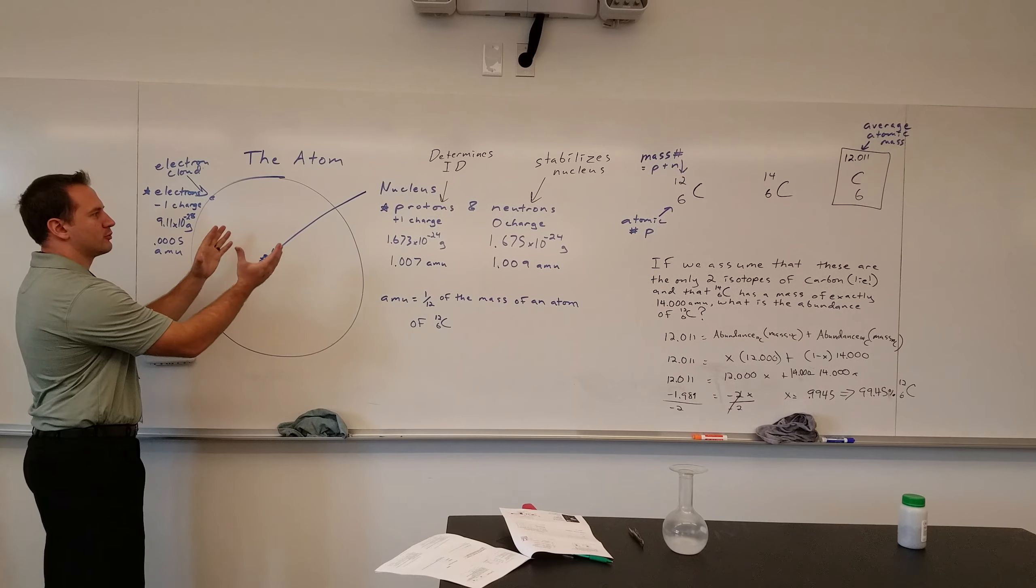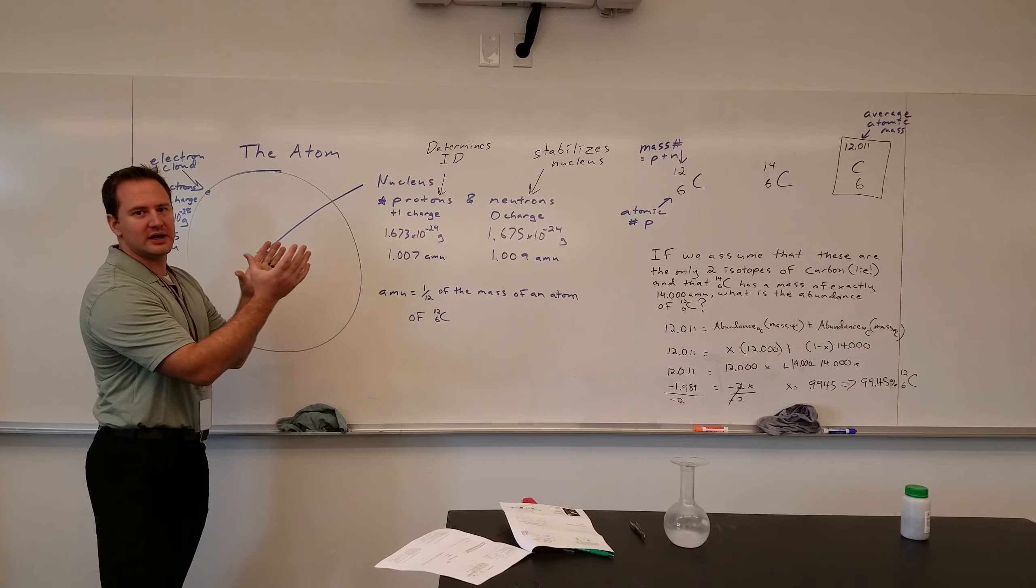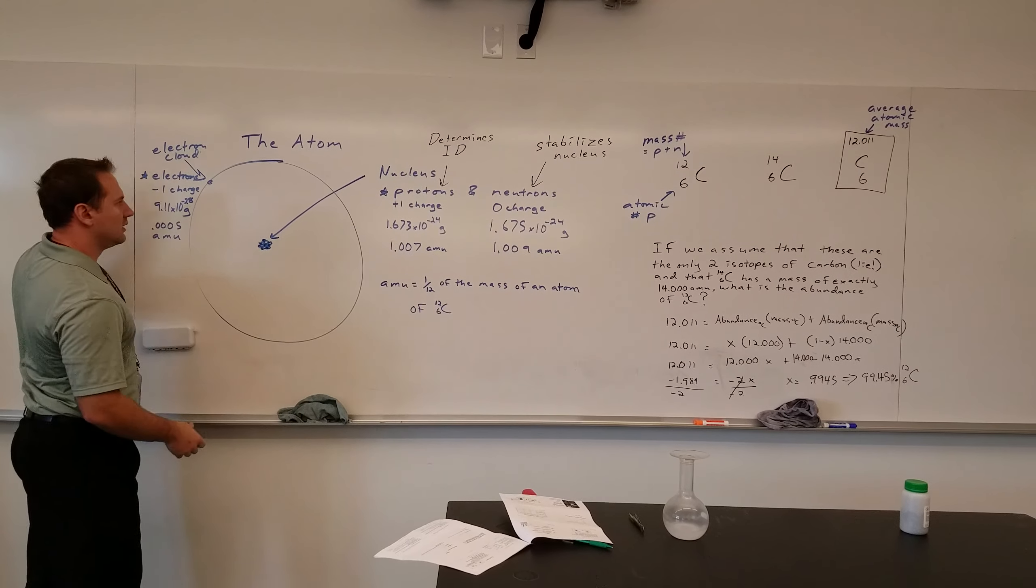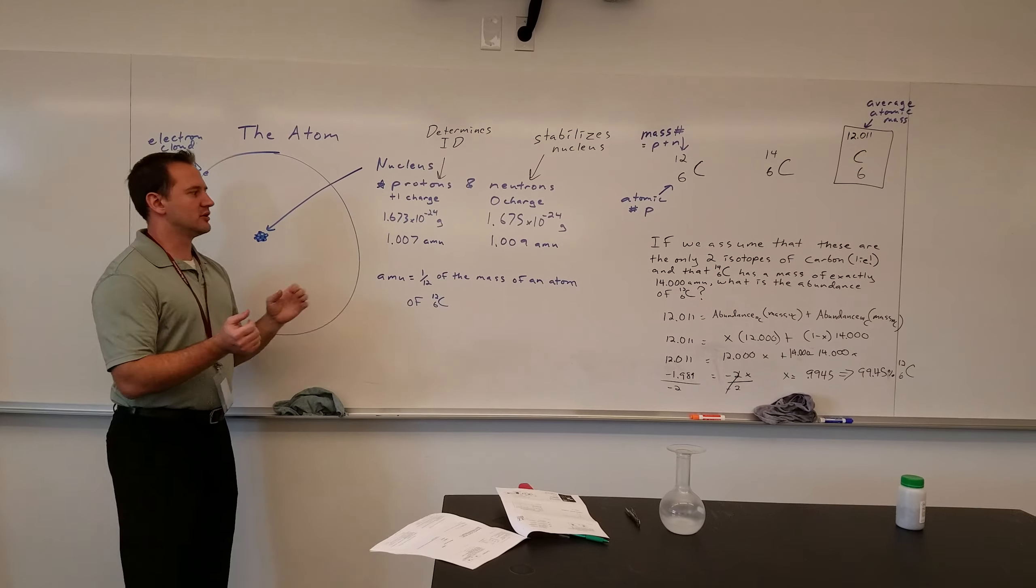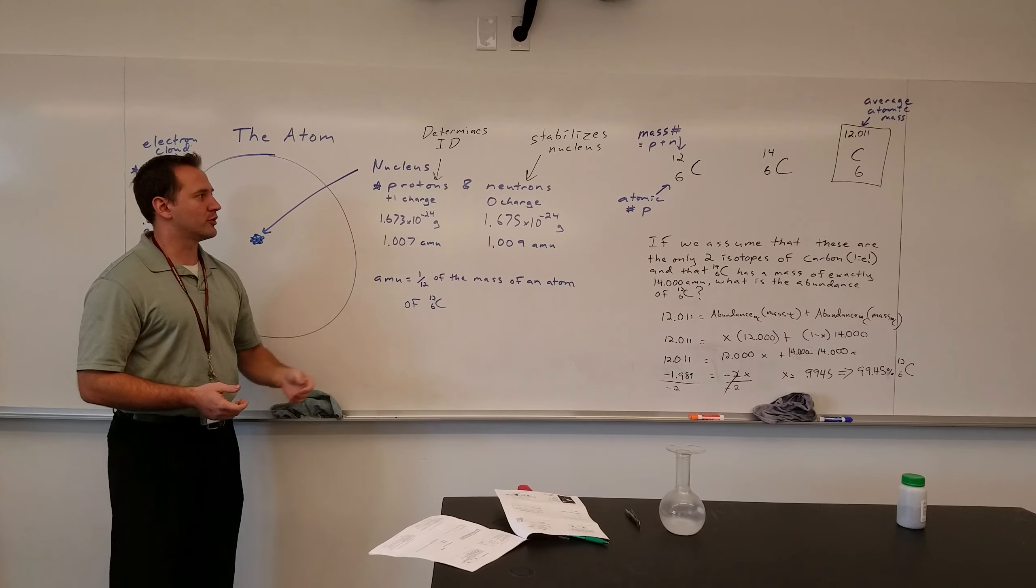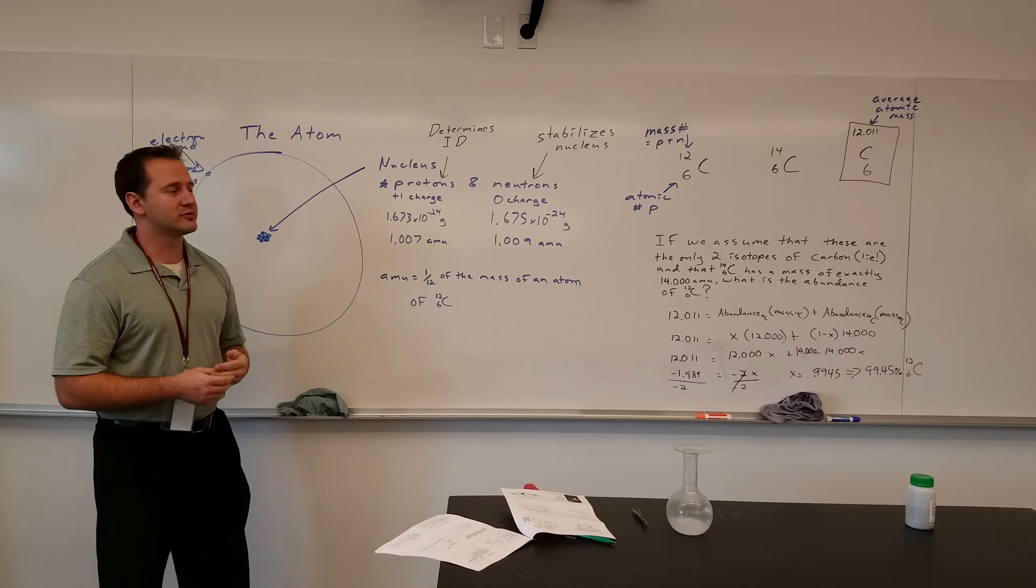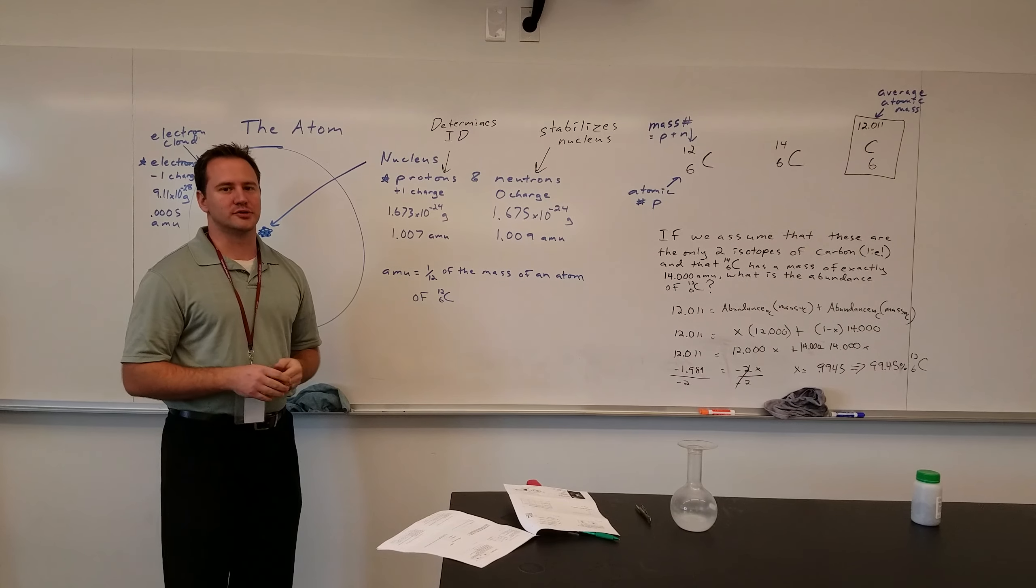So, again, the nucleus contains the protons and neutrons, and that's really not where most of the action happens with an atom. That happens out in the electron cloud. We're going to spend a large deal of time on this, but just a little bit here, so you can learn how to identify elements based on the number of protons, and identify different isotopes based on the number of neutrons, and use those to contribute to the average atomic mass.